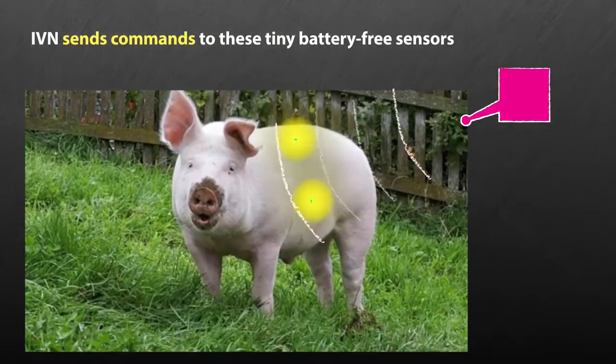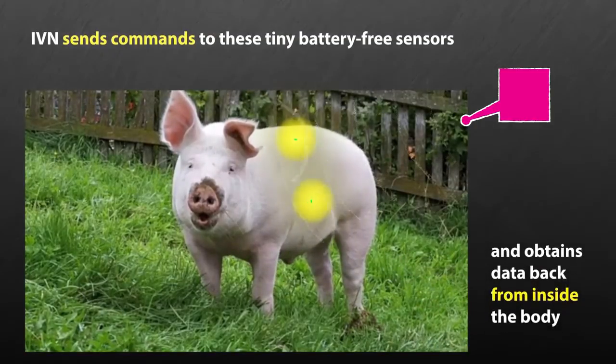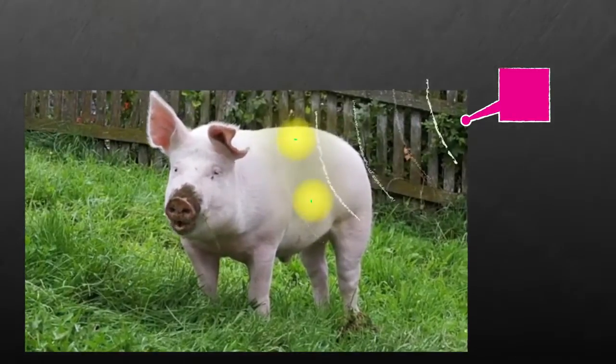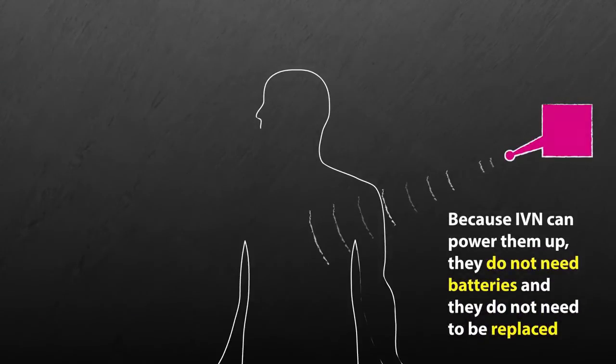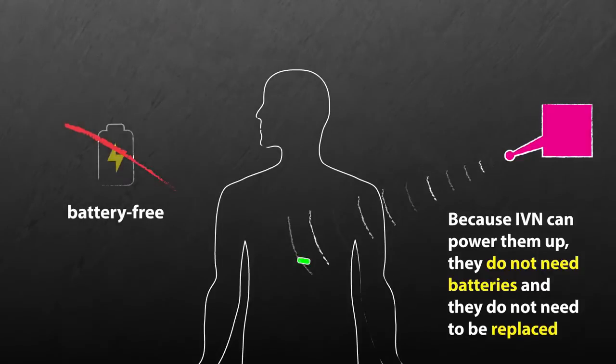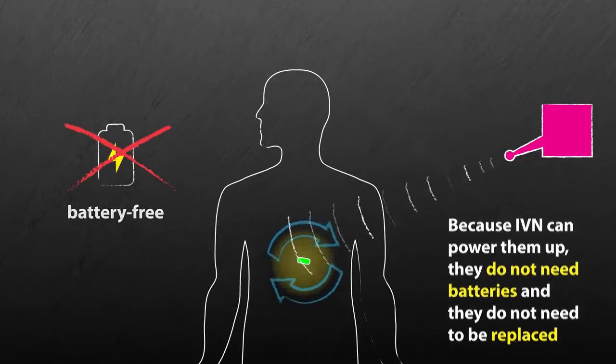IVN sends commands to these tiny, battery-free sensors and obtains data back from them from inside the body. And because IVN can power them up, they do not need batteries, and they do not need to be replaced.